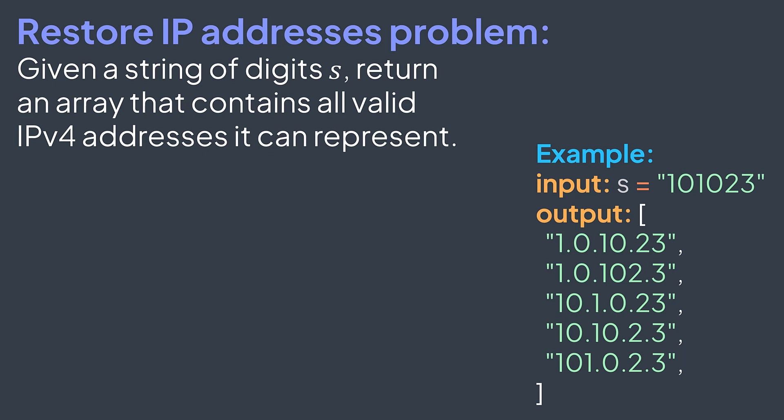For example, for this string, depending on where we put the dots, we can have several different addresses such as 1.0.1.023, 10.1.0.23, 101.0.2.3, and others. The task is to write an algorithm that generates all possible valid IPv4 addresses for a given string of integers s.